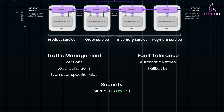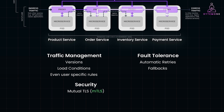By using mutual TLS or MTLS, service mesh ensures that communication between services is secure and encrypted. This adds an extra layer of security without requiring you to implement encryption in each service manually. So in our example, if the order service talks to the payment service, their communication will be encrypted.